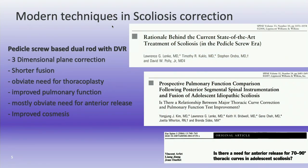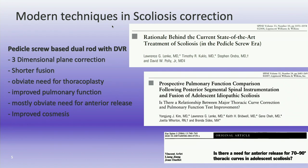So why do we use these modern techniques and what are the advantages? Pedicle screw-based dual rod with direct vertebral rotation gives us three-dimensional plane correction and allows shorter fusions. It really obviates the need for thoracoplasty — I have not done one in my own career. There are improved pulmonary function outcomes, well-documented with pulmonary function tests, and it mostly eliminates the need for anterior release even for larger, stiffer curves. And obviously, improved cosmesis regarding the rib hump, trunk balance, and shoulder balance.